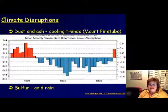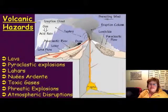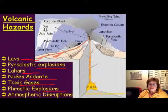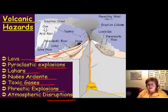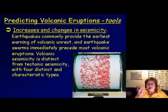This slide shows the atmospheric disruption after Mount Pinatubo, which caused about two years of global cooling. Altogether, the volcanic hazards include: lava, pyroclastic explosions, lahar, glowing cloud, toxic gases, phreatic explosions, and atmospheric disruptions.